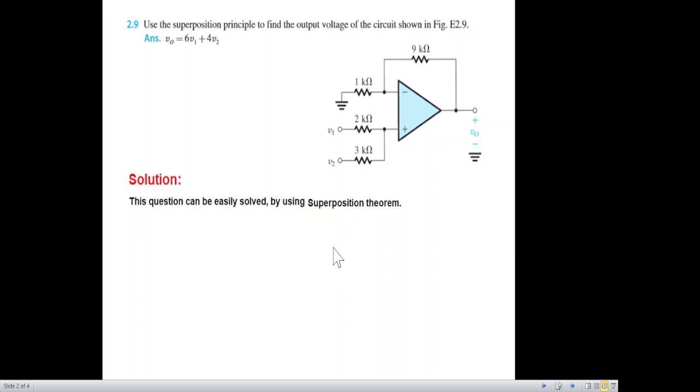We will be using superposition theorem. Let v1 be active and v2 be zero. So our circuit will become like this: v1 is active and v2 has been grounded.